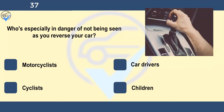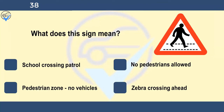Who's especially in danger of not being seen as you reverse your car? Motorcyclists, car drivers, cyclists, or children. It may not be possible to see a small child through the rear windscreen of your vehicle. Be aware of this before you reverse. If there are children about, get out and check that it's clear before reversing.